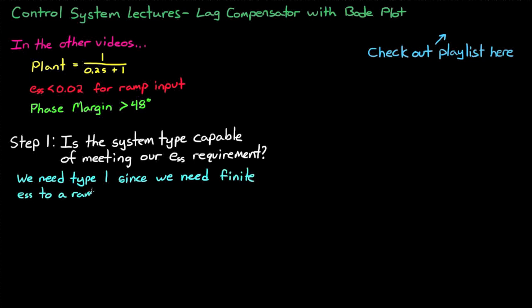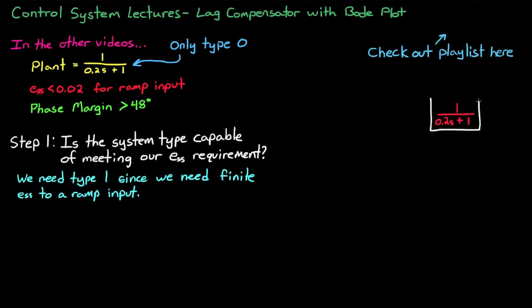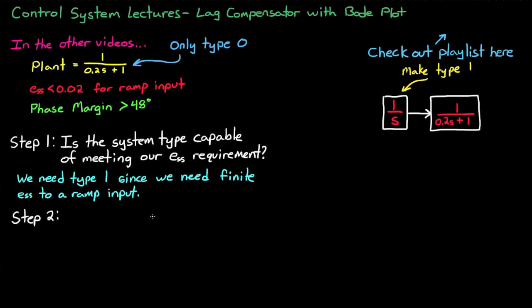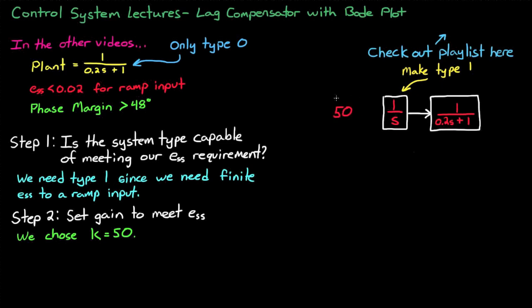Without this increase in system type, no amount of gain would ever allow us to meet our steady state error for a ramp input — the error would continue to grow to infinity. That's because our system is only type 0, since there are no poles at the origin. Now step 2 is to choose a gain that's going to get us there. We came up with k must be greater than 49, and to make the math easier, we just chose k equals 50.